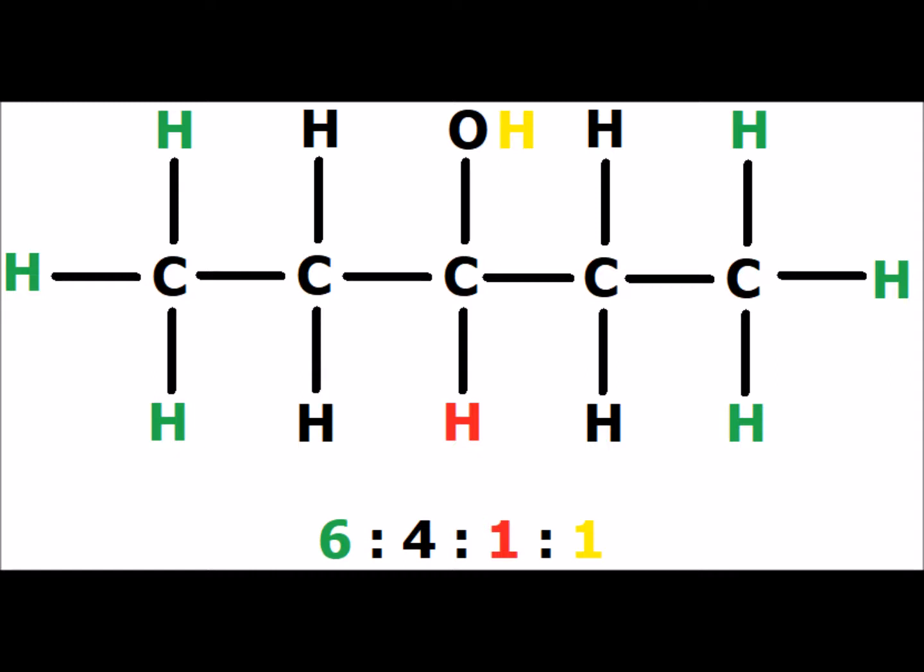3-pentanol has only four distinct hydrogen signals because the left side of the molecule is the mirror image of the right side, with a mirror plane through the third carbon. We have one signal for the alcohol hydrogen shown in yellow, one red hydrogen shifted downfield due to oxygen, the methylene hydrogens on both sides of carbon 3 shown in black are symmetry equivalent, and the six methyl hydrogens shown in green are likewise mirror images and therefore chemically identical. The ratios are 6 to 4 to 1 to 1.